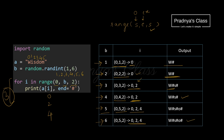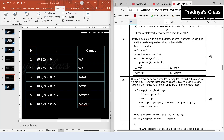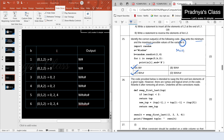After comparing the outputs with the given options, we find that A is a possible output and C is also a possible output. The other types of outputs are not possible. The minimum possible value of B is 1 and the maximum is 6.